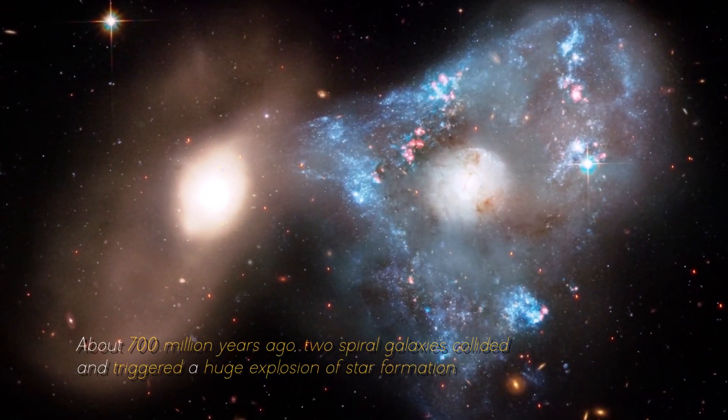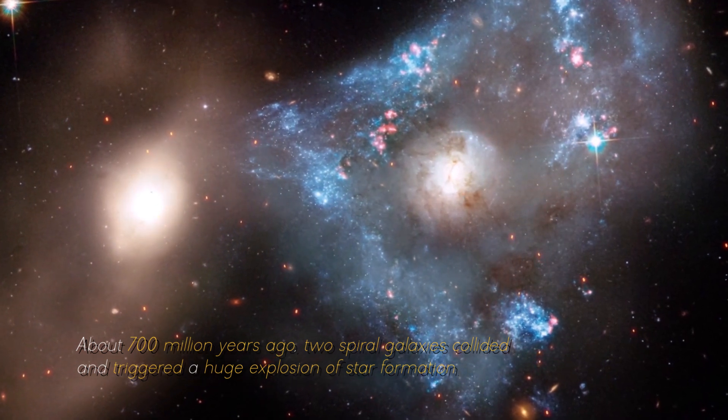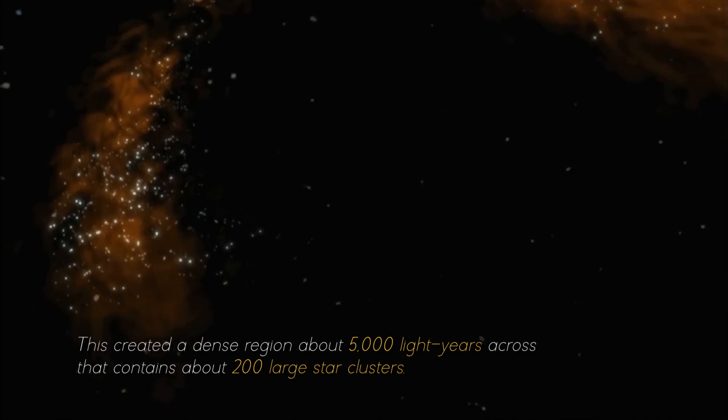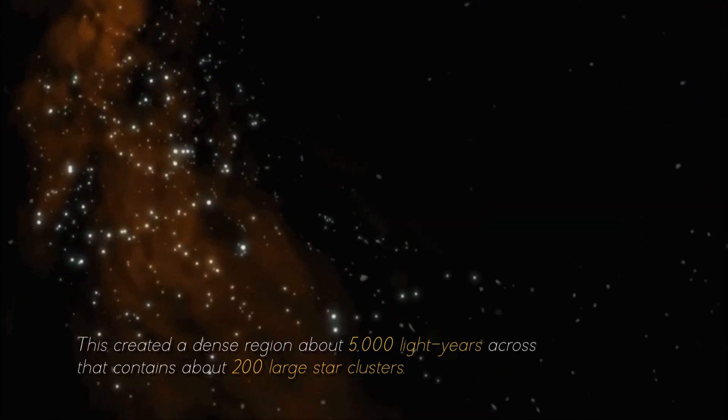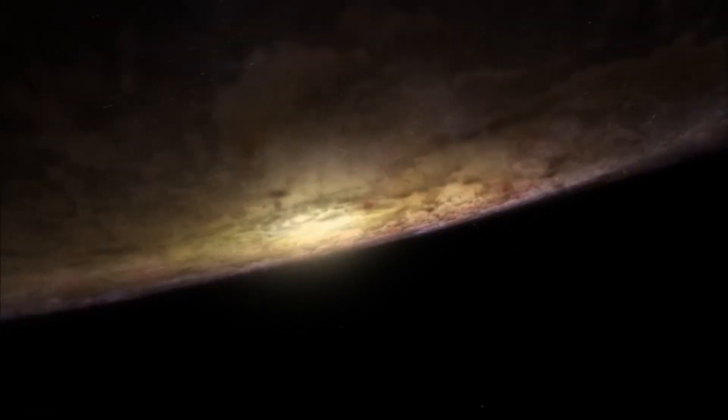About 700 million years ago, two spiral galaxies collided and triggered a huge explosion of star formation. This created a dense region about 5,000 light years across that contains about 200 large star clusters. Surprisingly, this small area contains as much gas as the entire Milky Way.